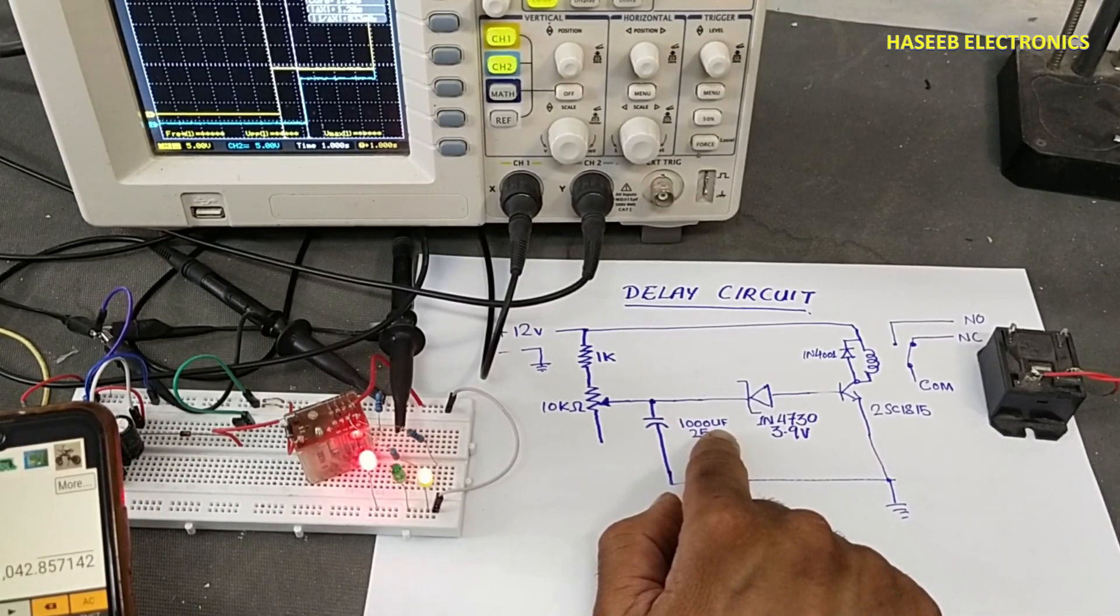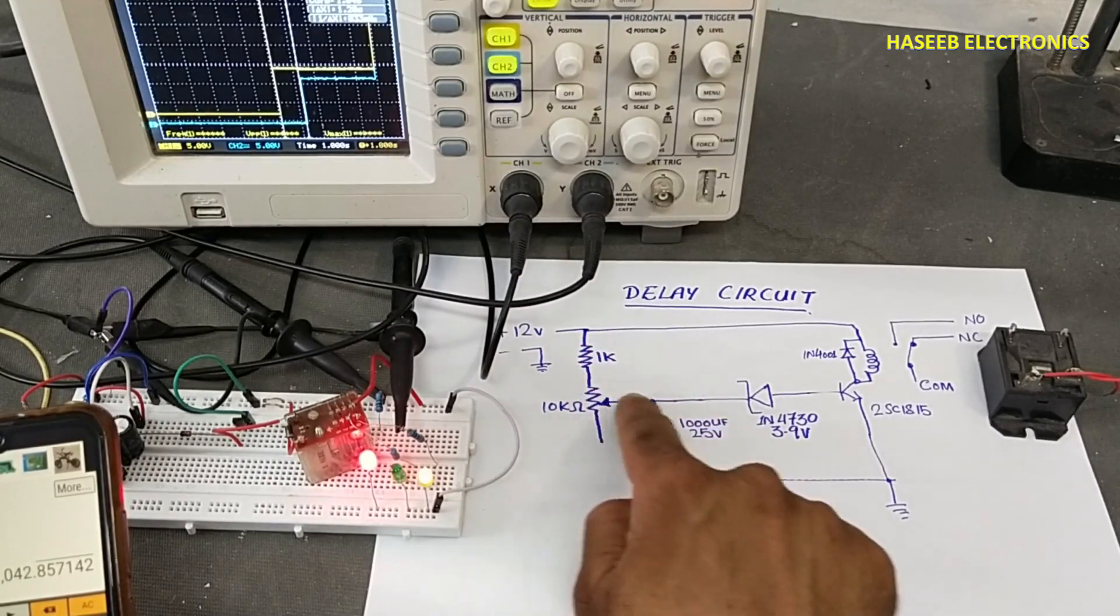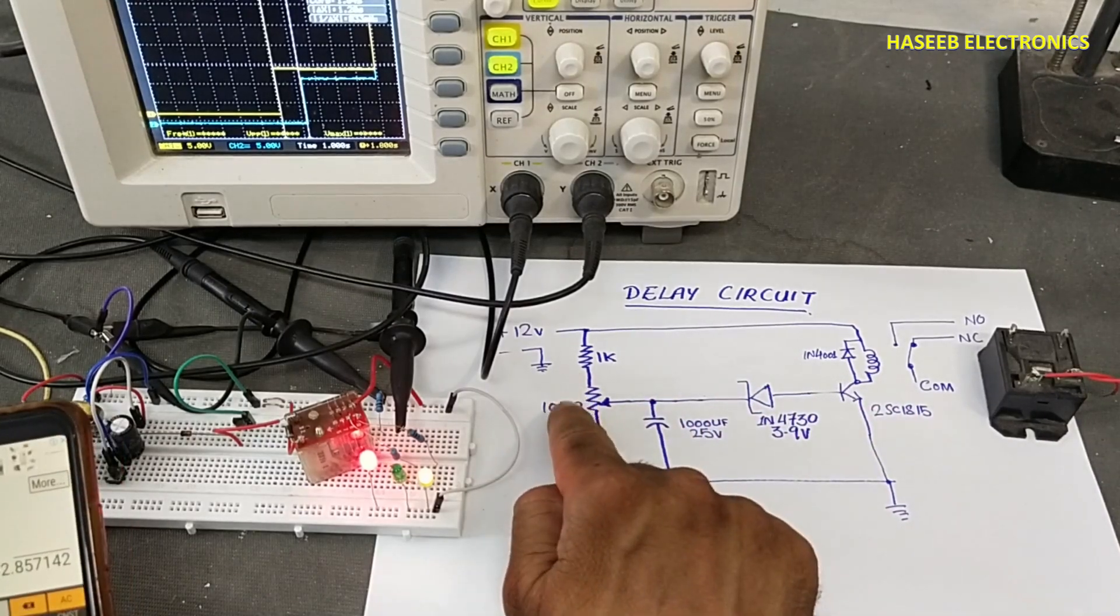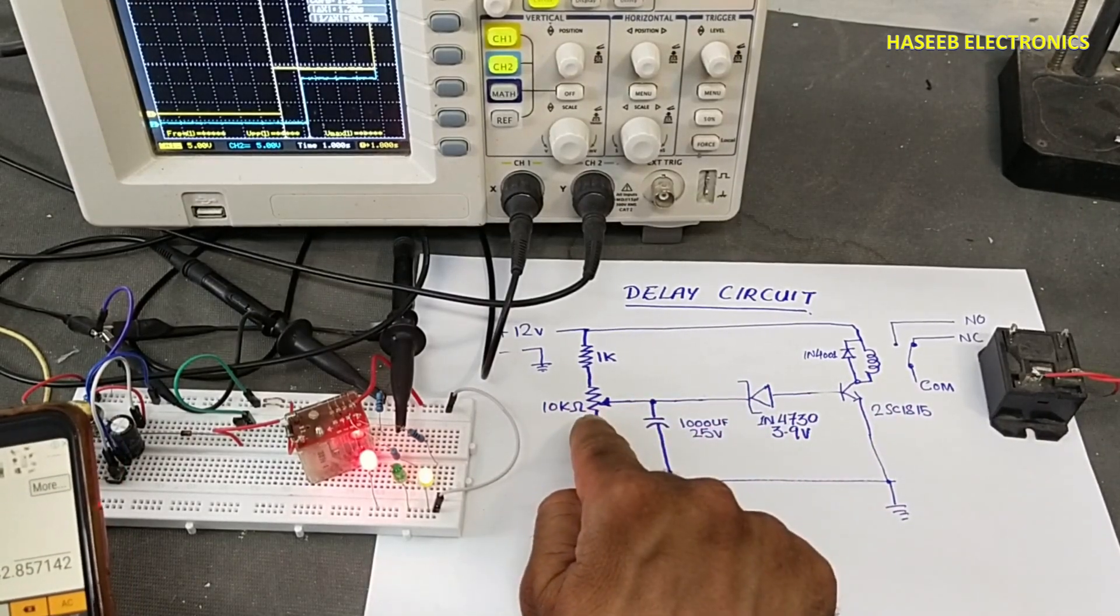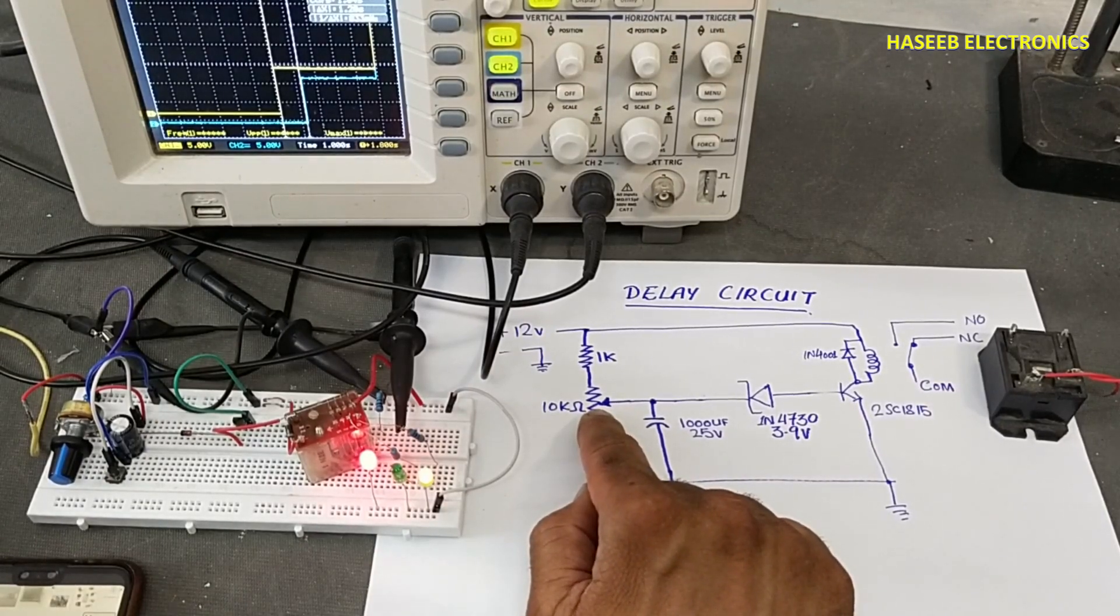In this condition when we are using 1000 microfarad, the capacitor will start charging through this parallel path. We have one path here, the second path here. We can also add fixed resistance here, but it is better to add potentiometer, any trim pot, to get our required time.